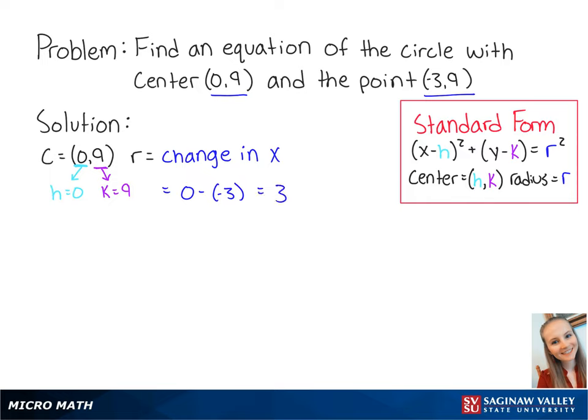Now that we have our h, our k, and our r, we can write our equation as x minus 0 squared plus y minus 9 squared equals 3 squared.